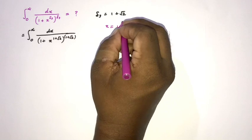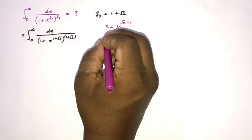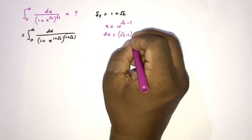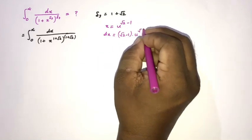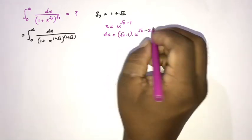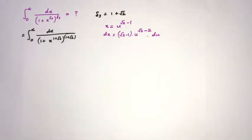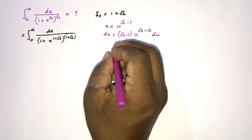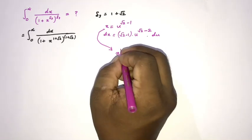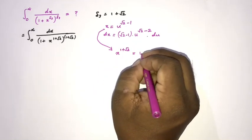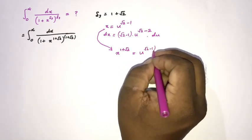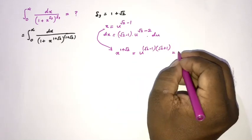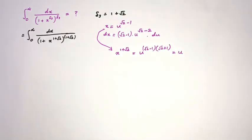First, take the substitution x equals u raised to the power square root of 2 minus 1. Differentiating, dx equals, by the general power rule, square root of 2 minus 1 times u raised to the square root of 2 minus 2, du. Then x raised to the silver ratio, i.e. x raised to the 1 plus square root of 2, equals u raised to (square root of 2 minus 1)(square root of 2 plus 1), which by difference of squares simplifies to just u.